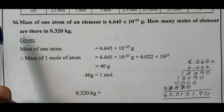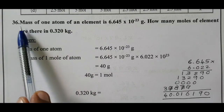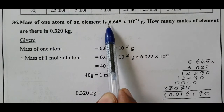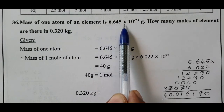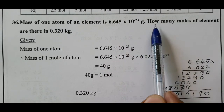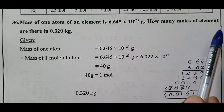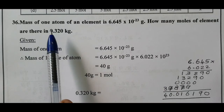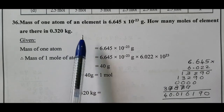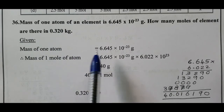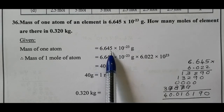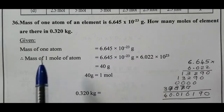Question number 36: The mass of one atom of an element is 6.645 into 10 power minus 23 gram. How many moles of element are there in 0.320 kilogram? Mass of one atom is given as 6.645 into 10 power minus 23 gram.